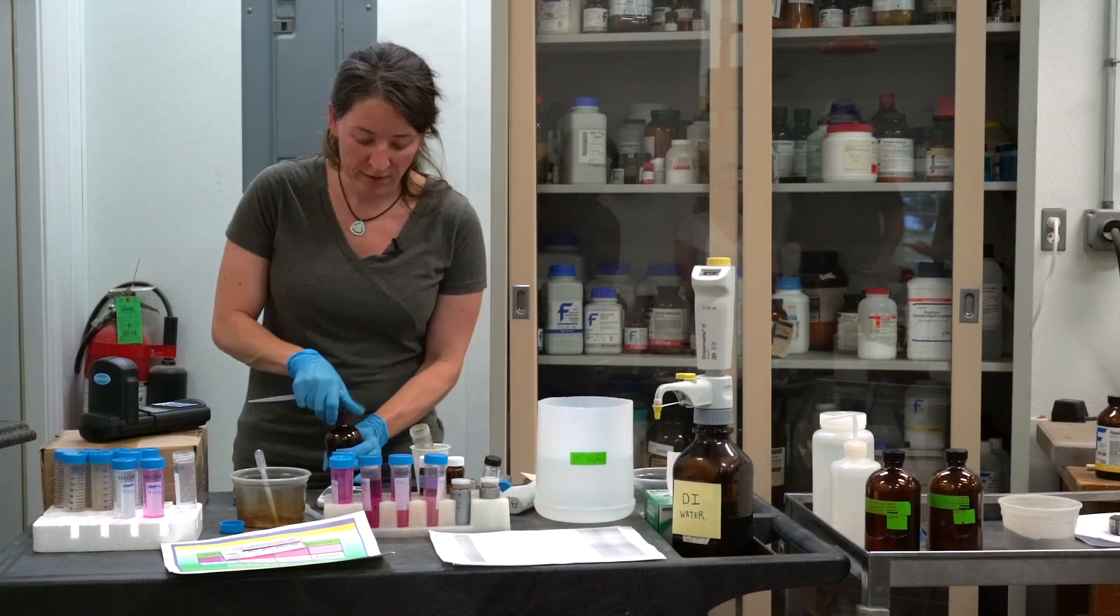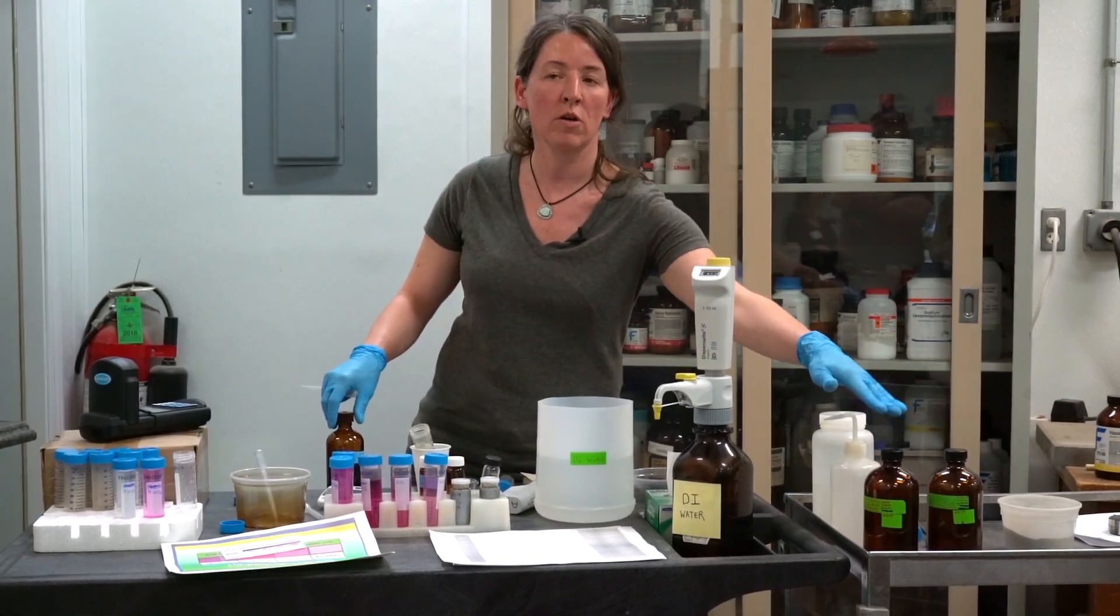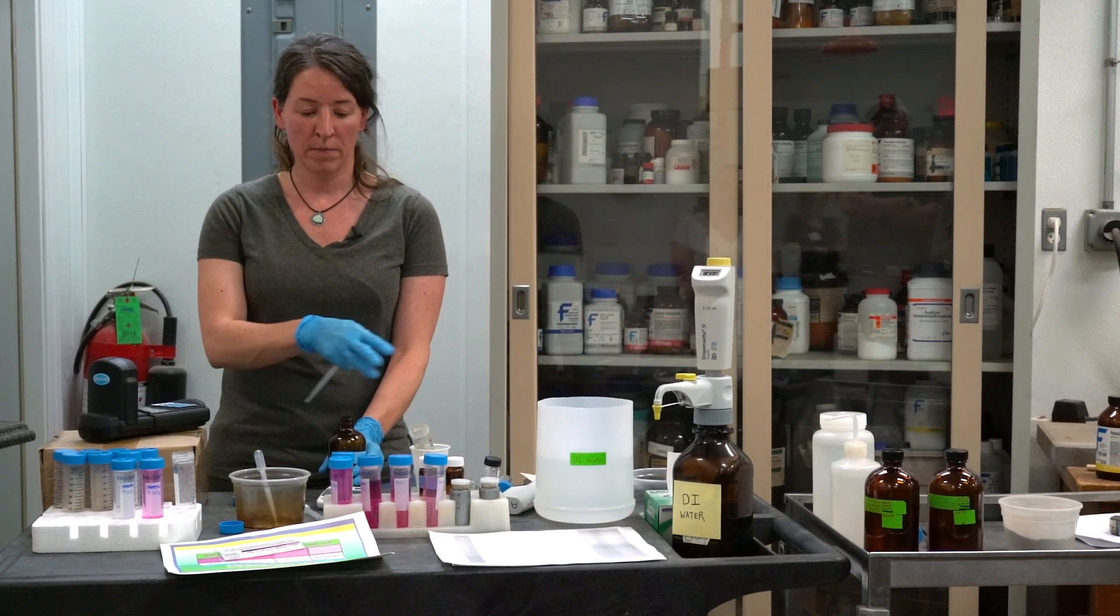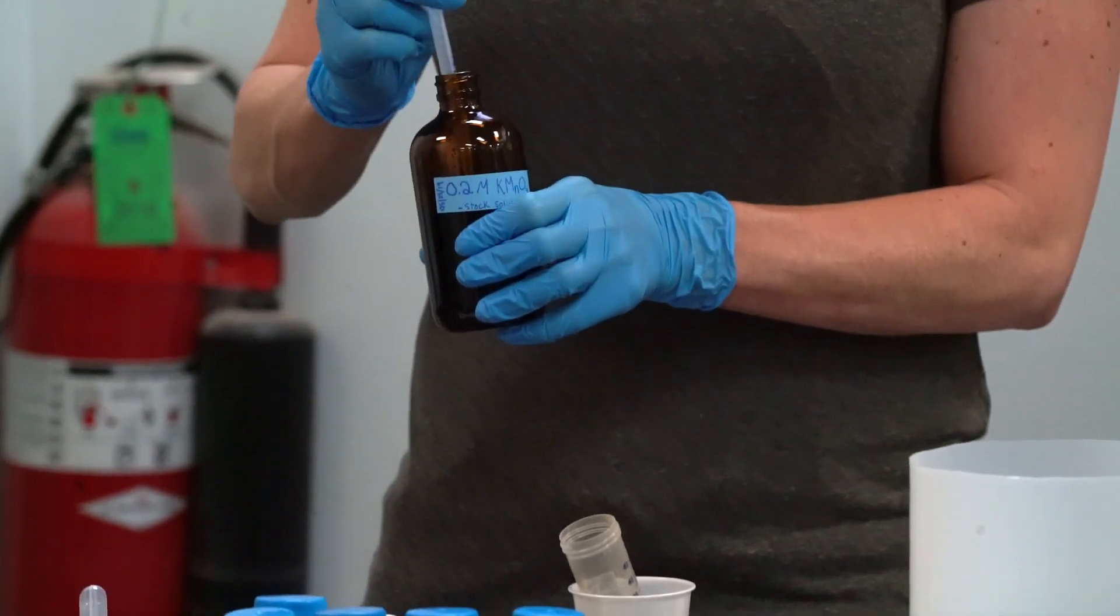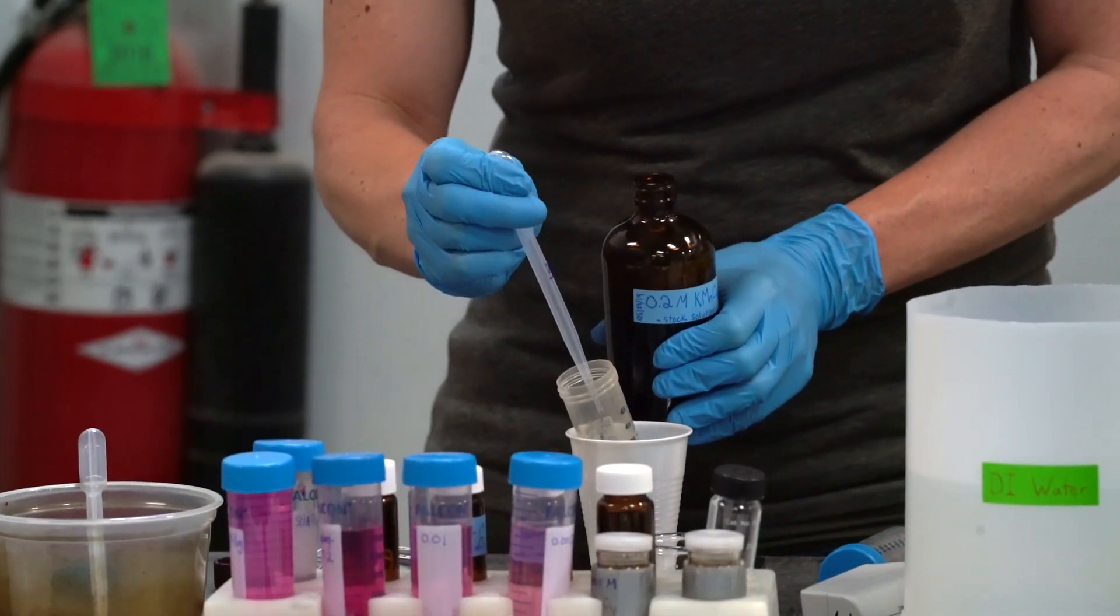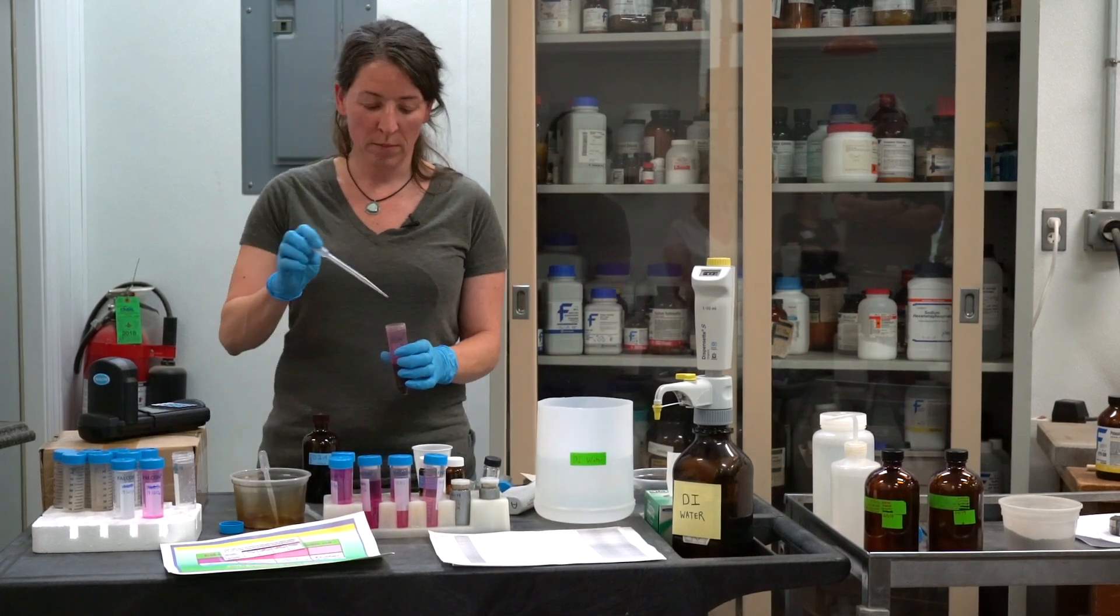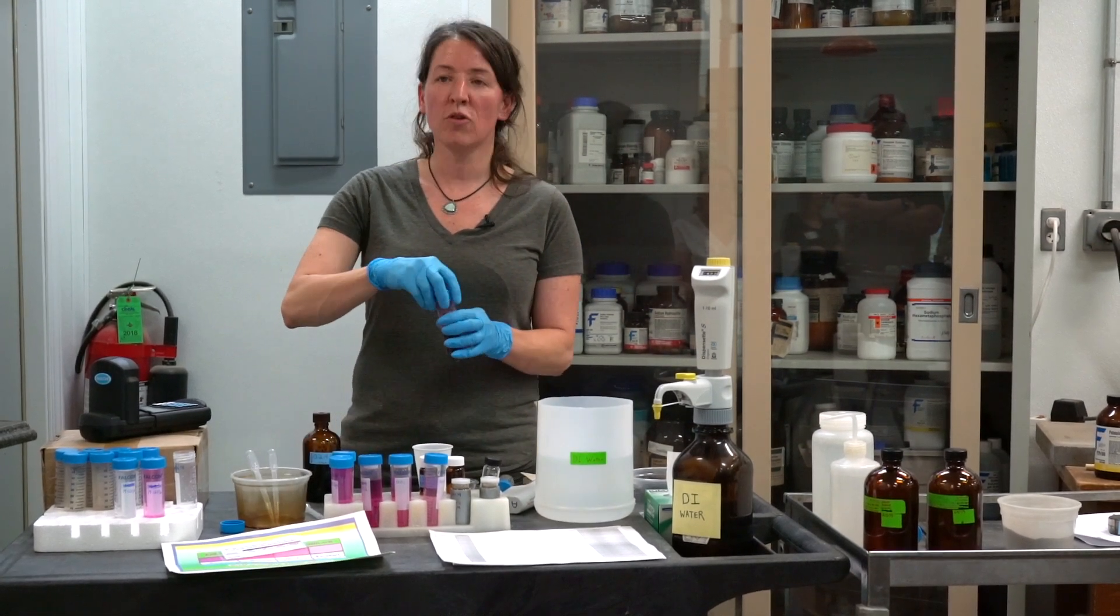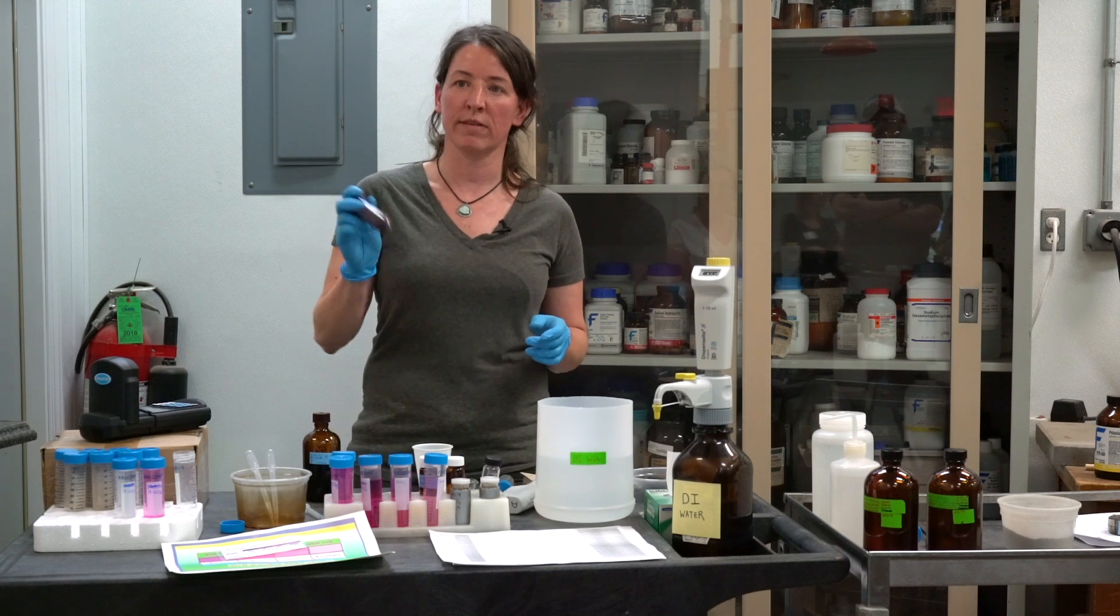On your potassium permanganate, you would have some as a backup with you, but I would keep it cool and in a dark cooler. Then just have a smaller container that you can use and add when you need more. So we're going to get two milliliters, add it. Once you add your two milliliters of potassium permanganate, it's two minutes shaking time. Start your timer for two minutes and shake continuously.